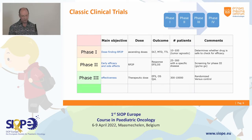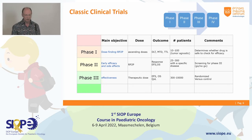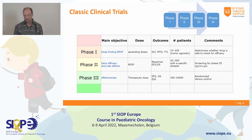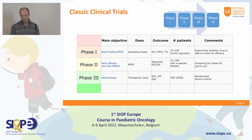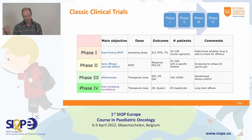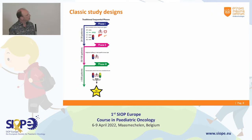In phase three, it's a randomized phase where we look at effectiveness using the therapeutic dose. Endpoints are usually event-free survival, overall survival, and sometimes quality of life. We need large numbers because we can only expect moderate improvements. And then there is a phase four that's more post-marketing — I'll skip that. So this is usually the order.